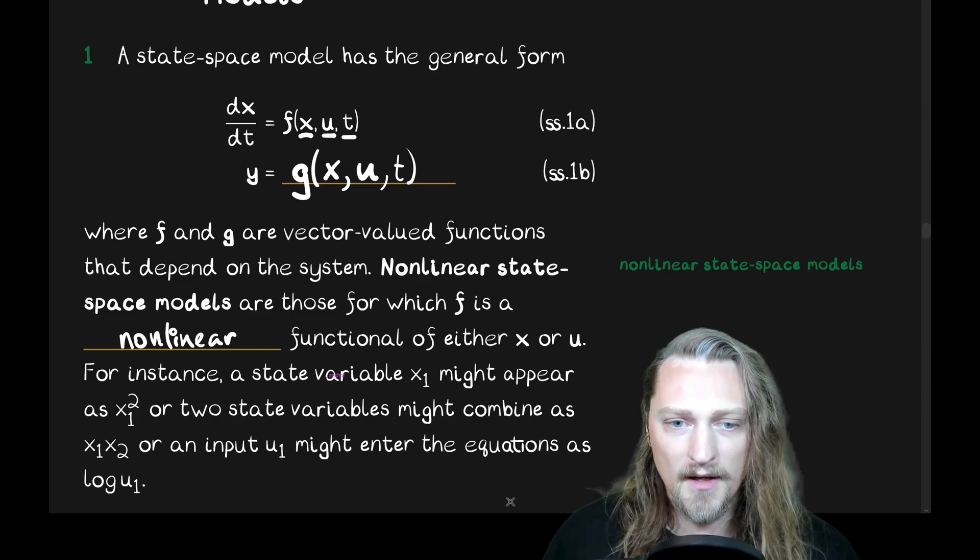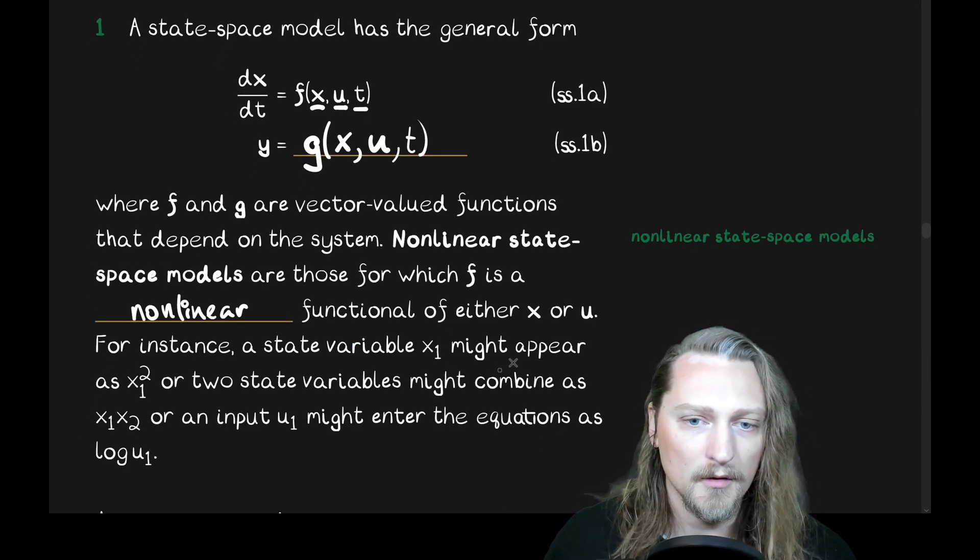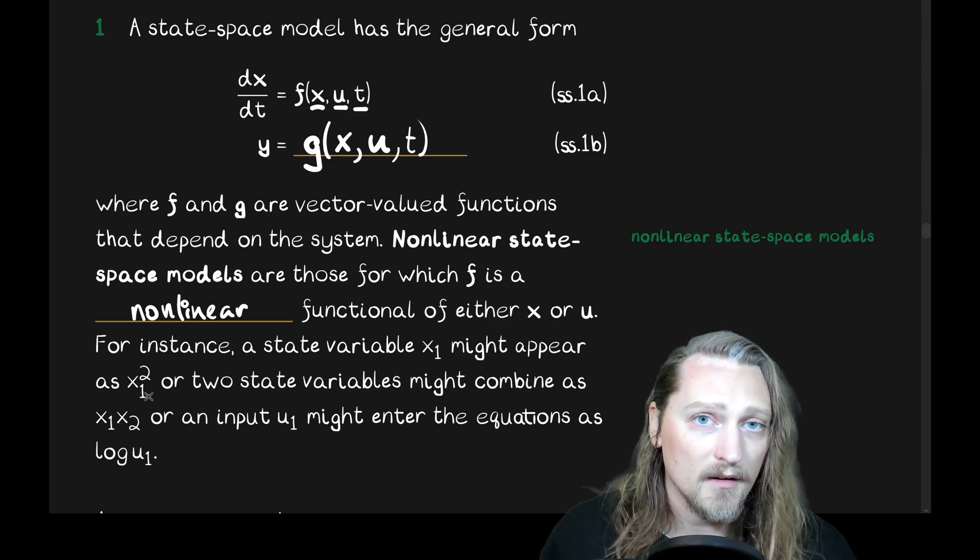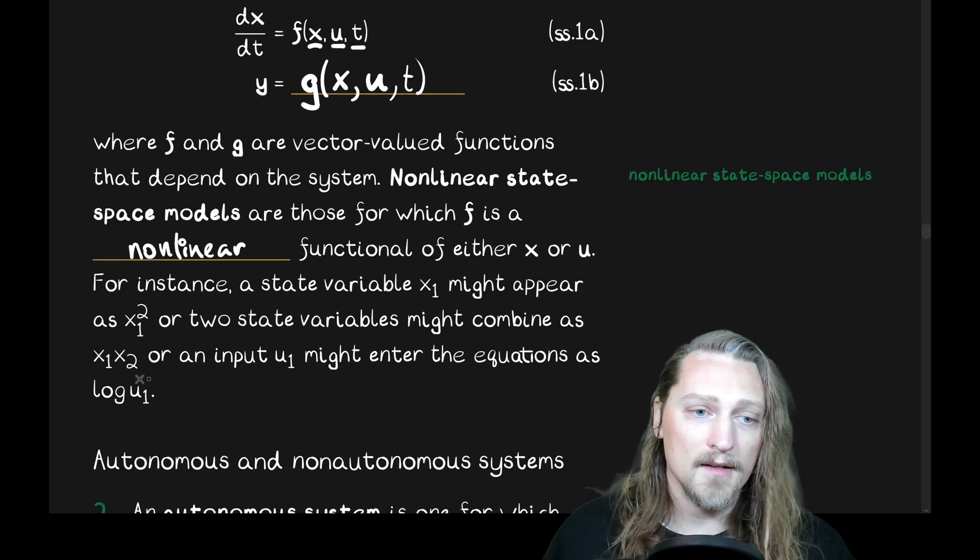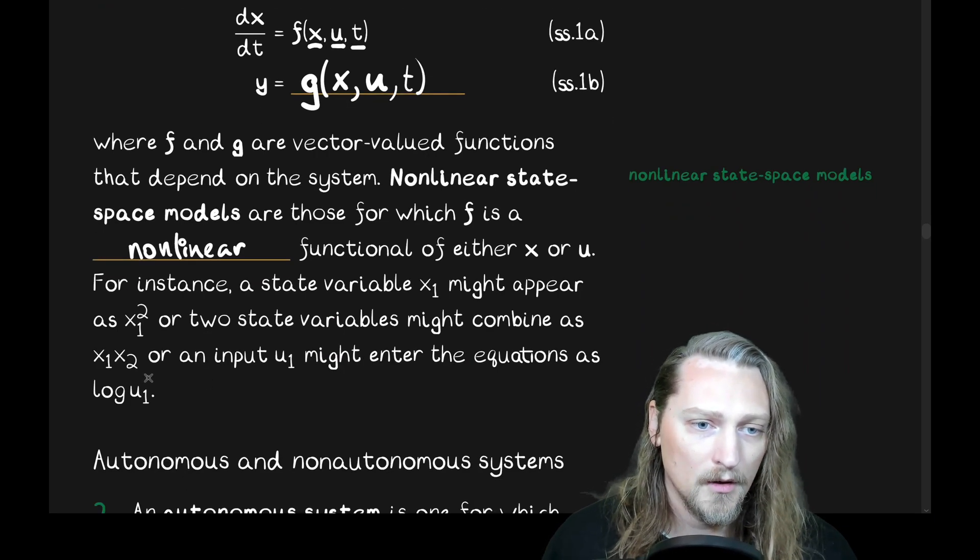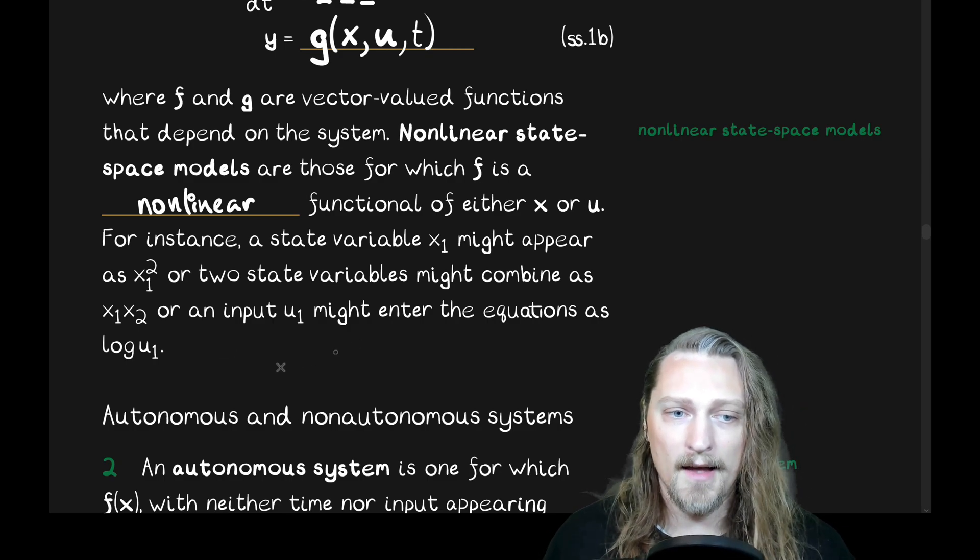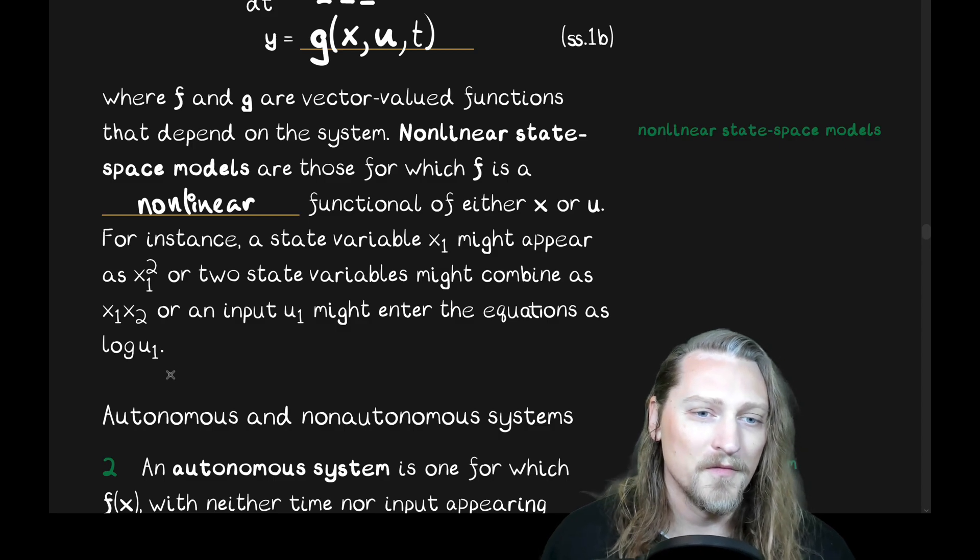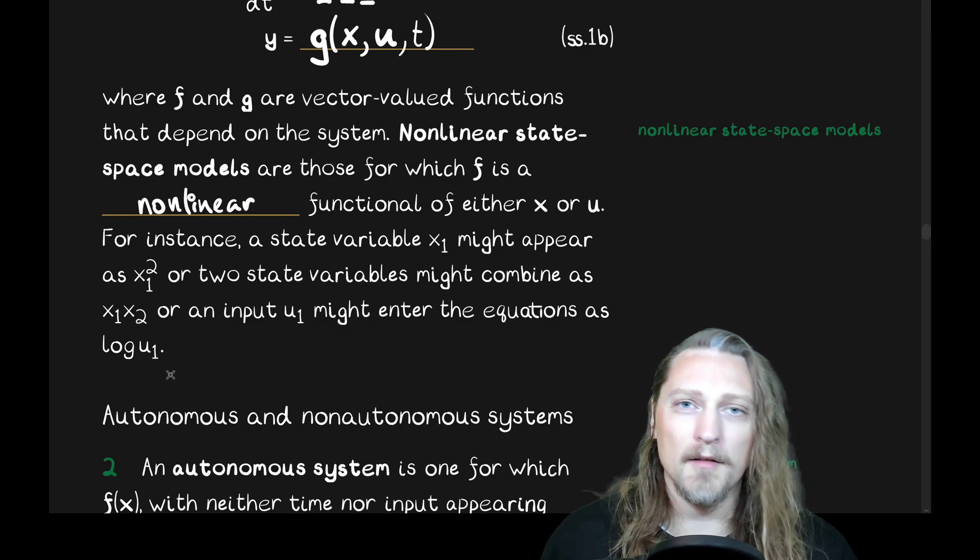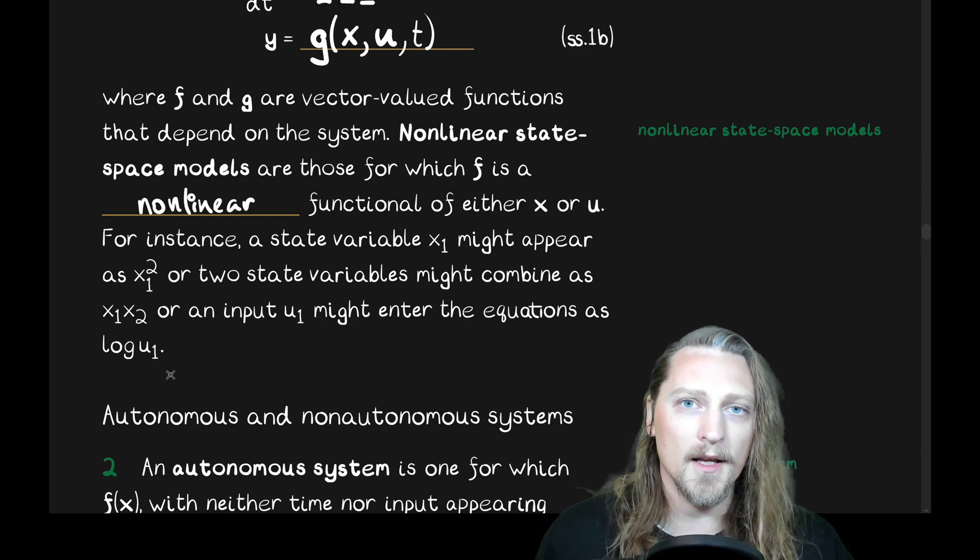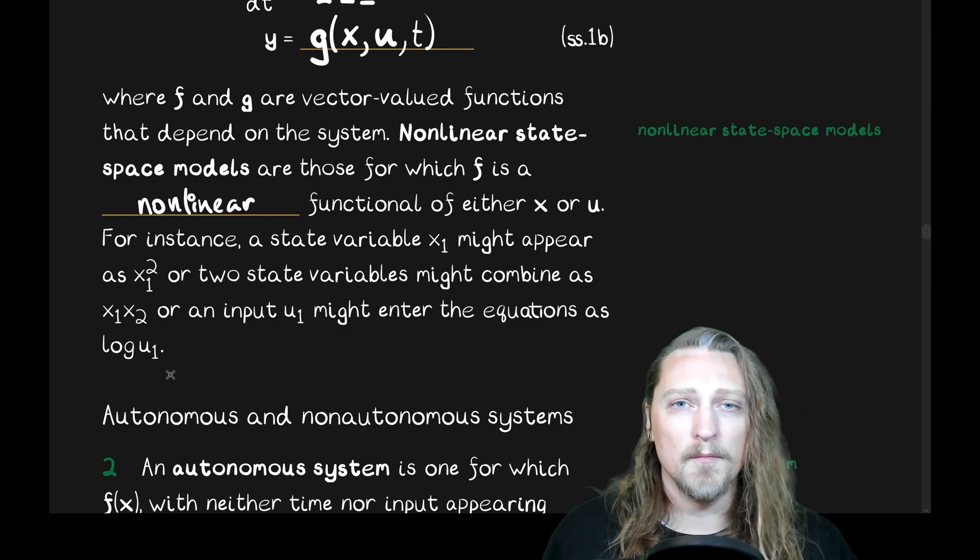For instance, a state variable x1, a scalar state variable, might appear as x1 squared, or two state variables might combine as x1 times x2, a product, or an input u might enter the equations as the logarithm of u1. So, this is sort of an array of examples of things that might happen that would cause your state-space model to be nonlinear.